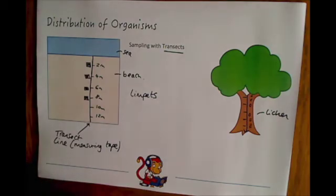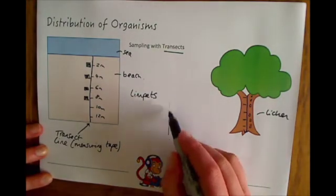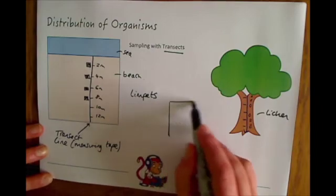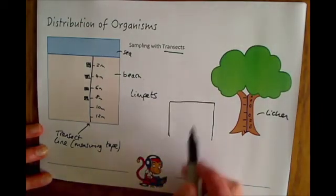A final example where you could use a transect is if you were looking at a wall. You could either do the transect along or up the wall.